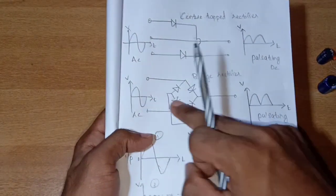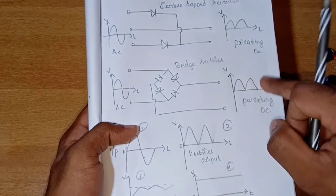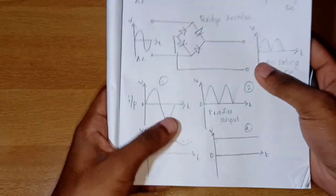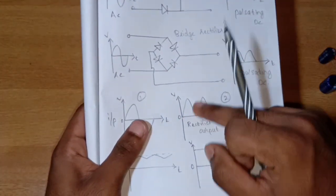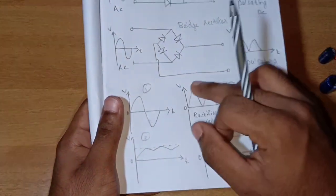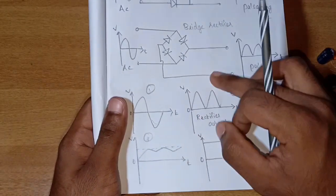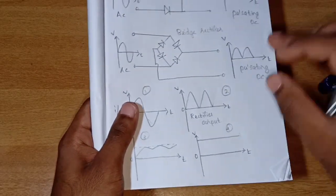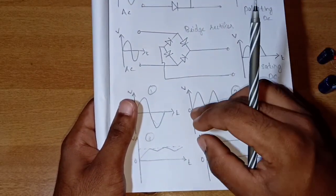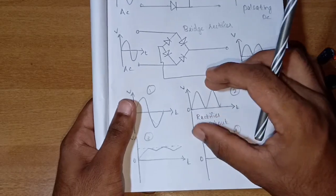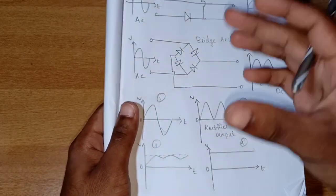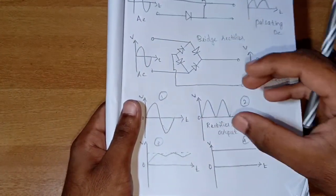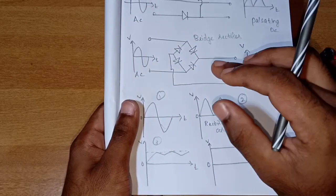For the bridge rectifier, the input is AC and the output is pulsating DC. We need to extract this pulsating DC — extract the AC component and retain the DC. This is the purpose of the filter circuit.